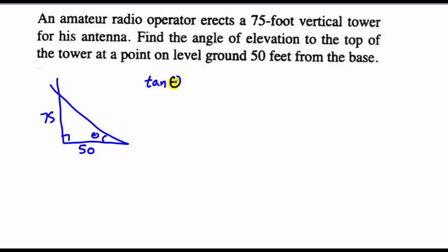Well, that's a pretty basic ratio. I have the opposite, I have the adjacent. So tangent of theta is going to be 75 over 50, or 3 halves. So theta will be the inverse tangent of 3 halves. Again, let's use degrees, so we're already in, and that's going to give us approximately 56.3 degrees.